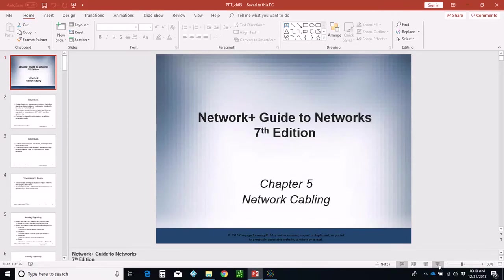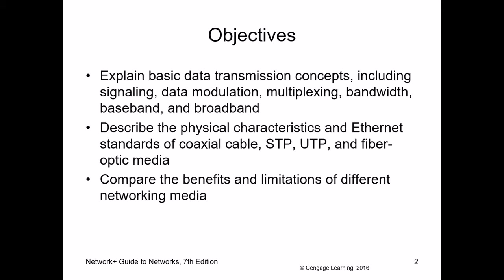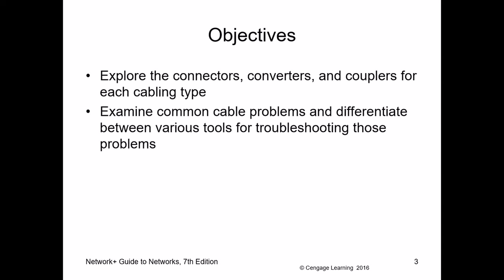Hello and welcome to a chapter on network cabling. In this chapter we're going to be talking about basic data transmission concepts: data modulation, multiplexing, the difference between bandwidth and throughput, and baseband versus broadband communications. Then we'll get into the cables — unshielded twisted pair, shielded twisted pair, coax, and fiber optic cables — covering benefits, disadvantages, protection, when to use one over the other, and some troubleshooting towards the end.